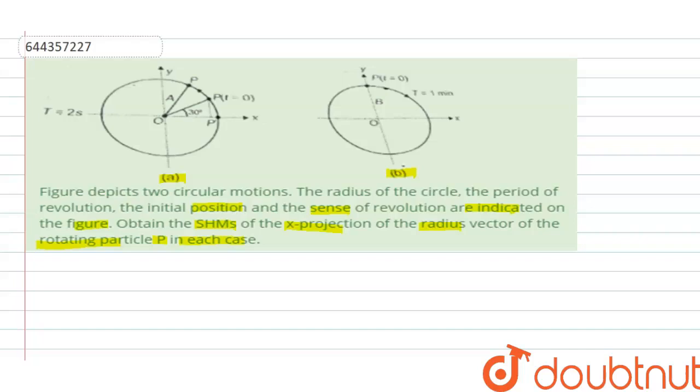Now let us take the first one. See in this figure, what is happening here? The particle is moving in an anticlockwise direction. Right. So if you write the equation, a generalized equation for the simple harmonic motion,